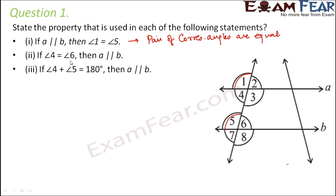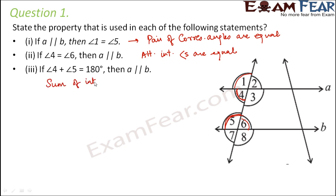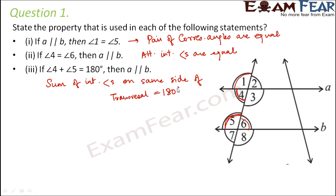If angle 4 is equal to angle 6, these are alternate interior angles. Since alternate interior angles are equal, therefore the lines are parallel, because alternate interior angles are equal only when the lines are parallel. For angle 4 plus angle 5 equal to 180 degrees, the property is: sum of interior angles on the same side of the transversal is equal to 180 degrees.